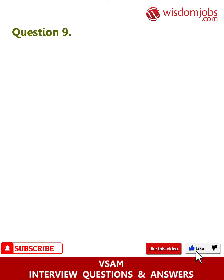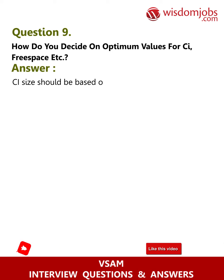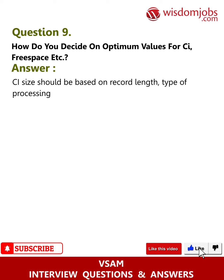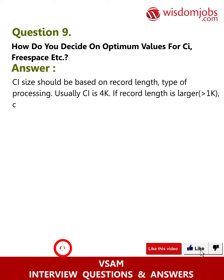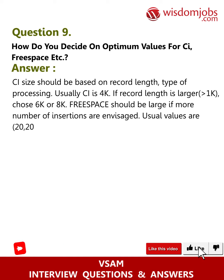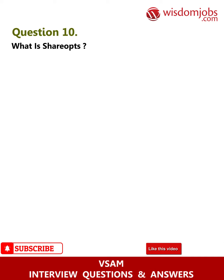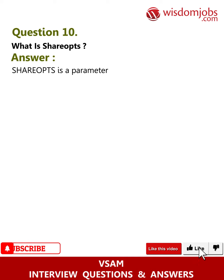Question 9: How do you decide on optimum values for CI, free space, etc.? Answer: CI size should be based on record length and type of processing. Usually CI is 4K; if record length is larger (greater than 1K), choose 6K or 8K. Free space should be large if more insertions are expected — usual values are (20, 20). When heavy updates are expected, CI size can be calculated accordingly.